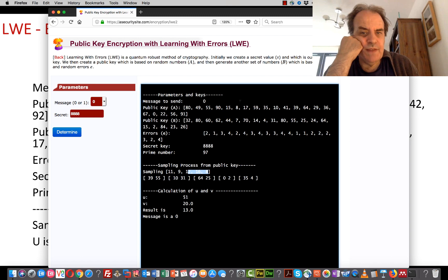We'll sample at the 11th position, 9th, 12th, 16th, and 8th. The pairs we end up with are 39 and 55, 10 and 31, and so on. We'll summate the A value and the B value. Because it's a 0, we won't add on our bit value. The value of U is 51 and V is 20. When we take V minus S times U mod Q, we get 13. 13 is less than the prime number 97, so the value is 0.